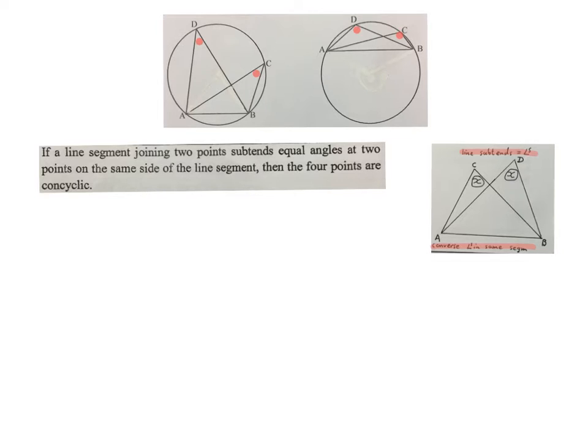And the reason you write when using this in a rider: the line subtends equal angles, which is what we said. Or you can just say the converse of angles in the same segment.